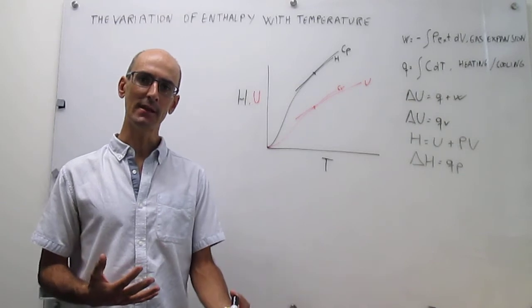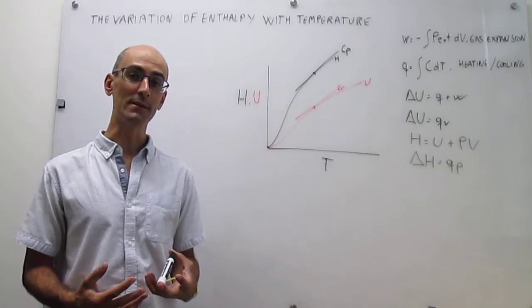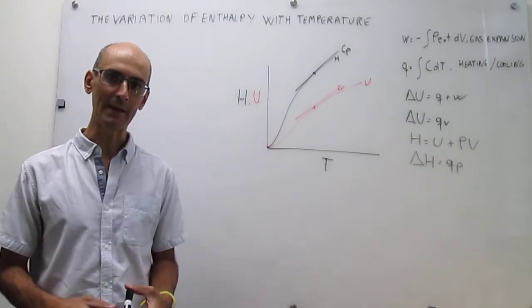The difference between the heat capacity at constant volume and constant pressure is particularly important when we examine the similarities and differences between the enthalpy and internal energy.